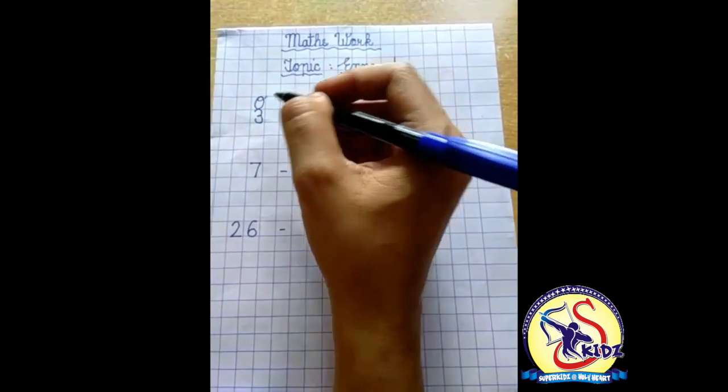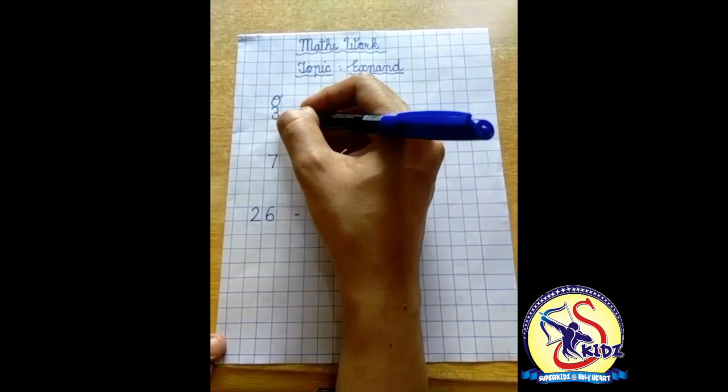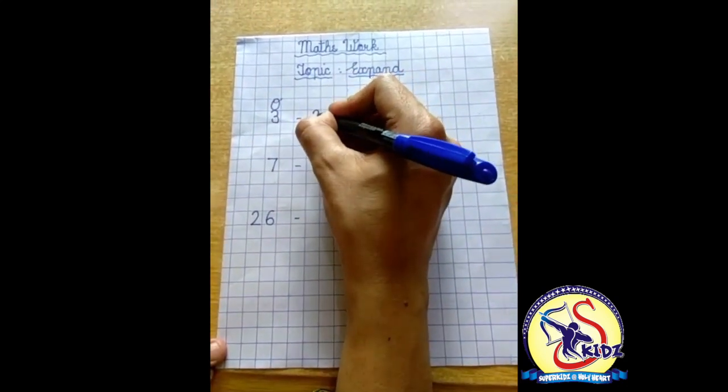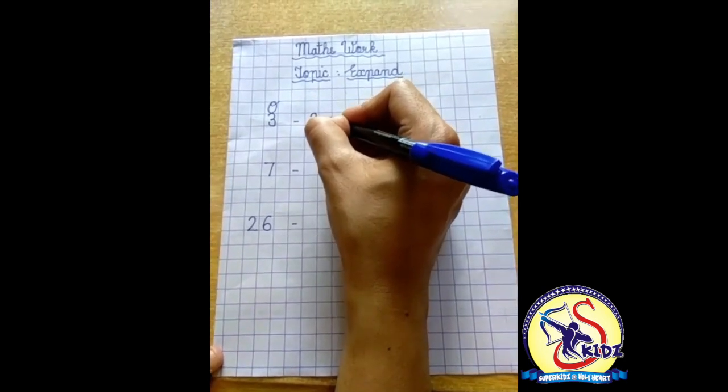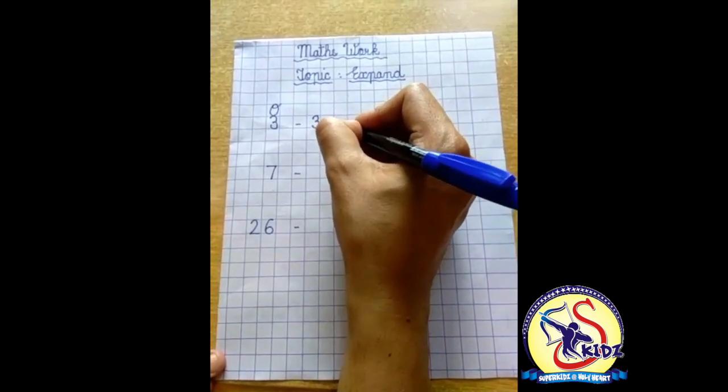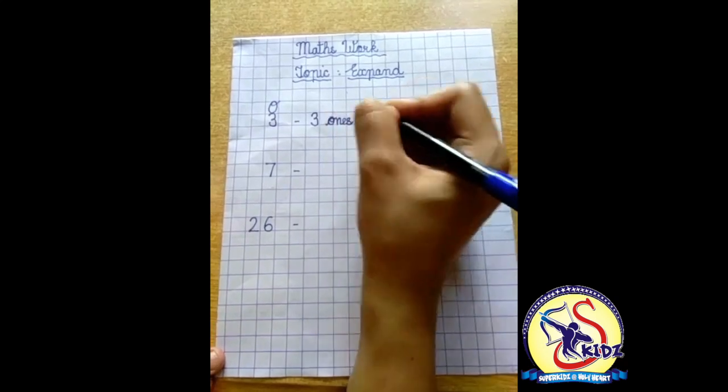So we will write this in full form. That is 3 ones. O N E S ones.